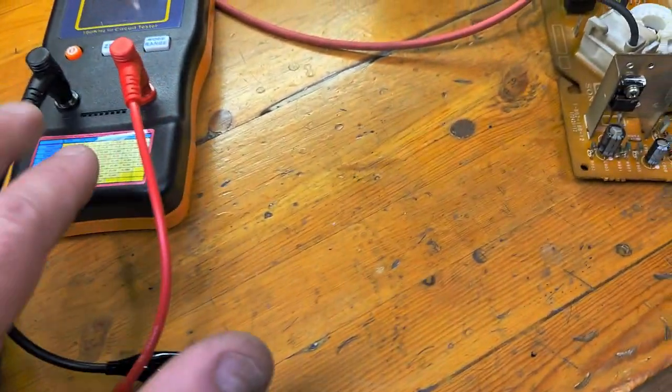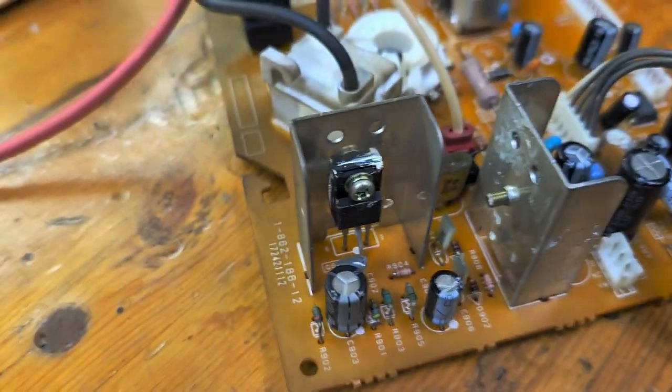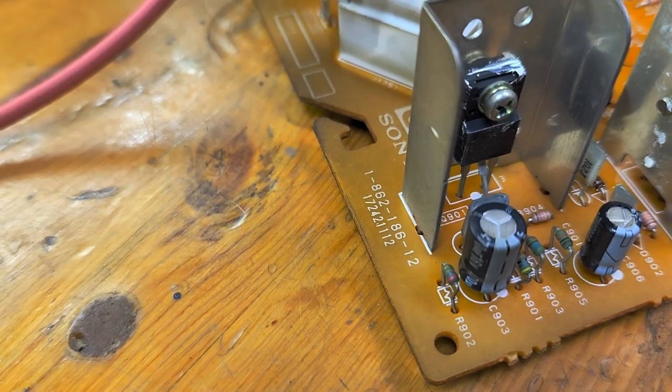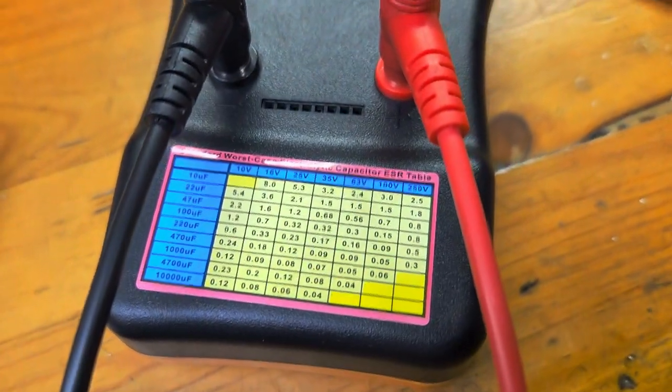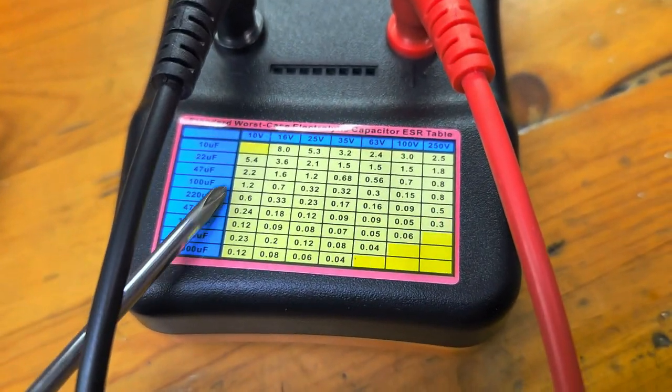So now I'm going to show you testing this on this left capacitor here. This is a 470 microfarad 16 volt. Now what that means, if you look at this chart here, you can see 470. So 470, 16 volt, 0.18 ohms.